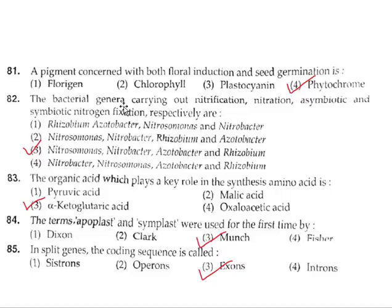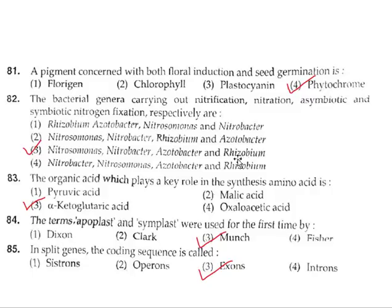Question 82: The bacterial genera carrying out nitrification, nitration, asymbiotic and symbiotic nitrogen fixation respectively. For asymbiotic nitrogen fixation, Azotobacter is used, and for symbiotic nitrogen fixation, the correct answer is option 3.